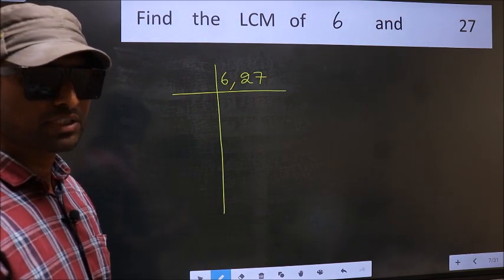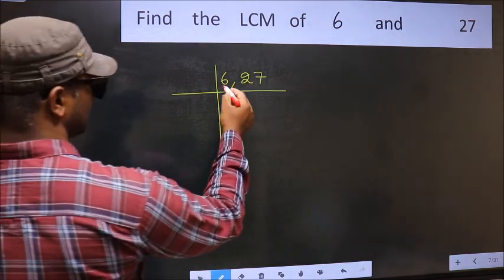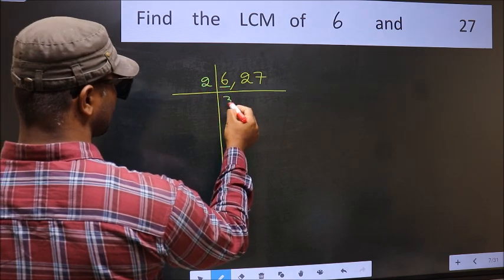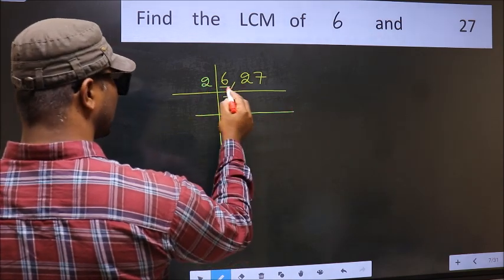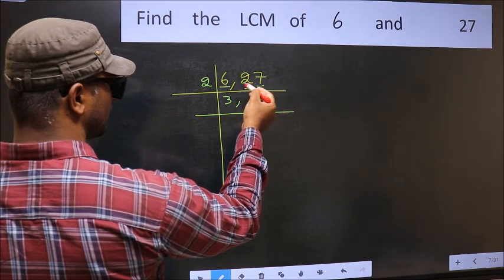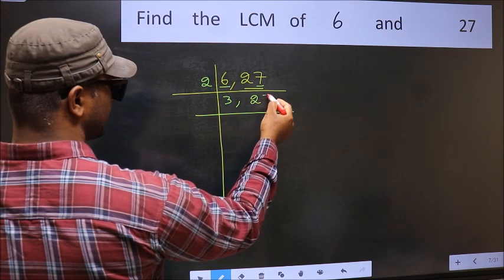Now you should focus on the first number, which is 6 here. 6 divided by 2 gives 3. The other number 27, last digit 7, not even. So this is not divisible by 2. So you write it down as it is.